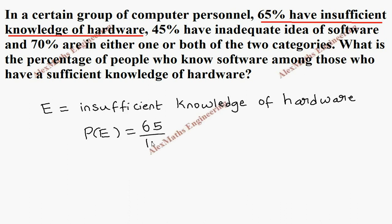So P(E) is, as per the given information, 65%. When we are writing in probability, we have to divide by 100, so 65 by 100.